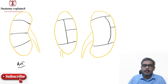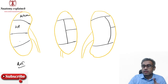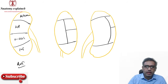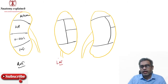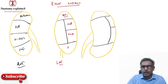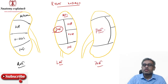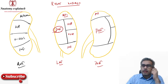Looking at the right kidney anteriorly, the segments are: apical, superior, middle, and inferior. Viewed laterally, you have apical, superior, middle, inferior, and the posterior segment — which is supplied by the posterior division. On the posterior view of the right kidney, the size of the posterior segment has increased, and you can also see the apical, superior, middle, and inferior segments.